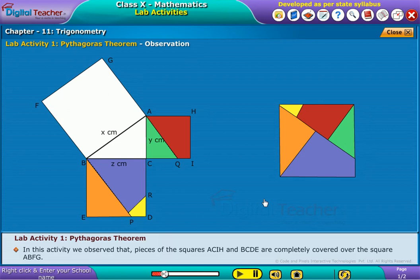In this activity, we observed that pieces of the squares ACIH and BCDE are completely covered over the square ABFG.